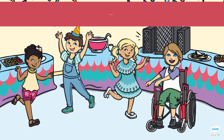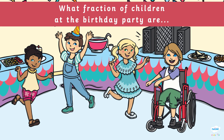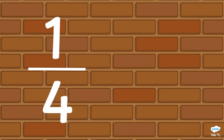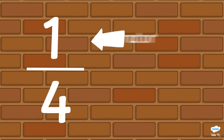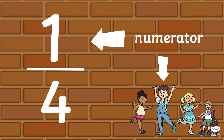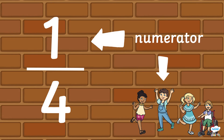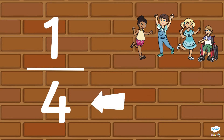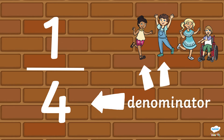What fraction of the children at the birthday party are wearing blue dungarees? One person out of four is wearing blue dungarees. He is the numerator. The whole group is the denominator because there are four people all together.